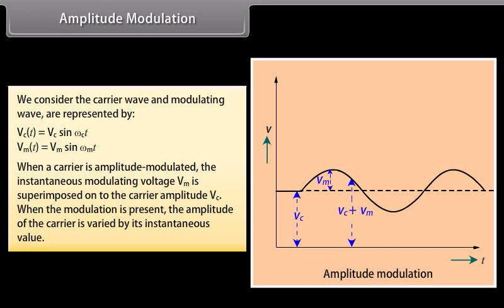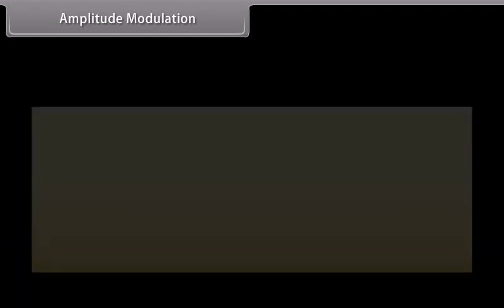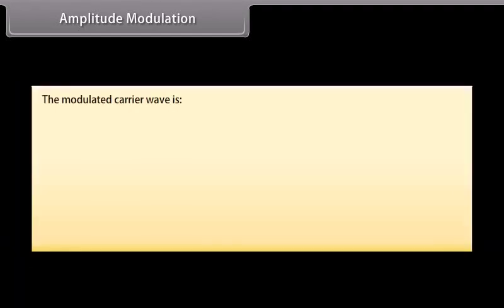When a carrier is amplitude modulated, the instantaneous modulating voltage Vm is superimposed onto the carrier amplitude Vc. When modulation is present, the amplitude of the carrier is varied by its instantaneous value. The modulated carrier wave is given by: V(t) = [Vc + Vm sin(ωmt)] × sin(ωct).